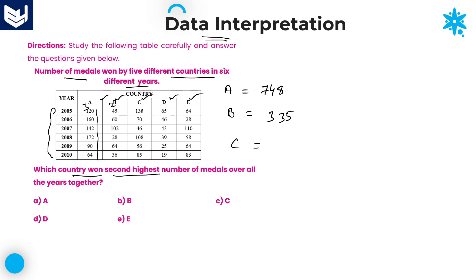For Country C, calculating the units place: 5, 11, 19, plus 6 is 25, plus 5 is 30. Carry forward 3. Then: 3 plus 3 is 6, then 10, 17, 20, 30. Carry forward 3 again. 3 plus 1 is 4, plus 1 is 5. So the number of medals won by Country C is 500.